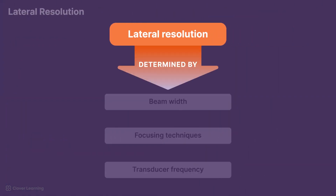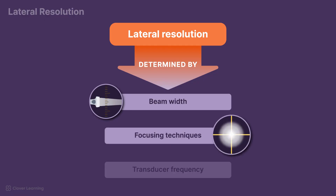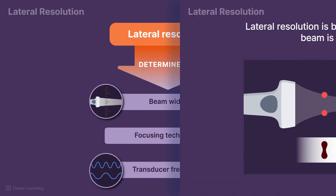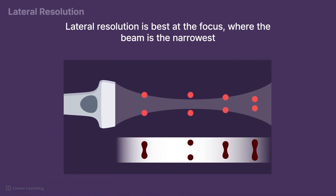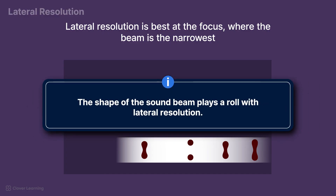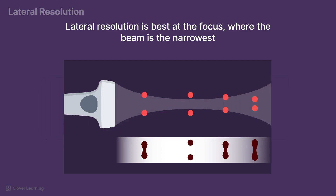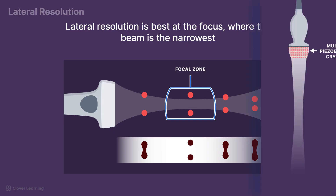Lateral resolution is determined by beam width, focusing techniques, and transducer frequency. A narrower beam provides better lateral resolution by minimizing the overlap of adjacent echoes. As a reminder, the shape of the sound beam plays a role with lateral resolution, which is discussed more in another lesson. Ultrasound systems use electronic or mechanical focusing to narrow the beam width at specific depths, which enhances lateral resolution in the focal zone.